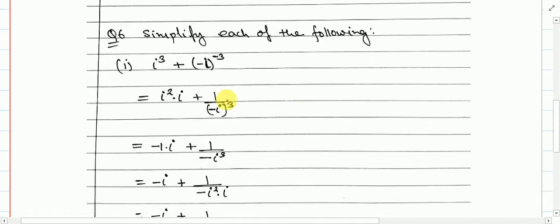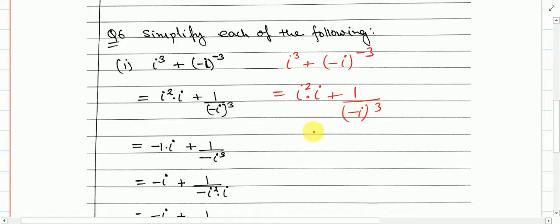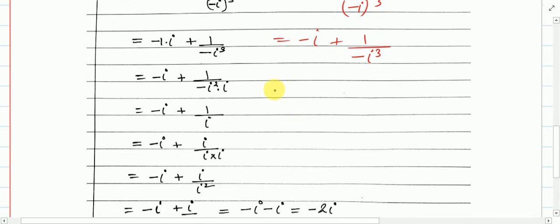Now let us see question number 6. Here we have to simplify i³ + (−i)^(−3). So i³ can be written as i² × i. In the second term, with a negative power, I can write it as 1 divided by (−i)³, since the power is negative. Since the power is odd: i² = minus 1, so i² × i = minus i. And here since the power is odd, we get minus i³. In place of i³ I can write minus i.